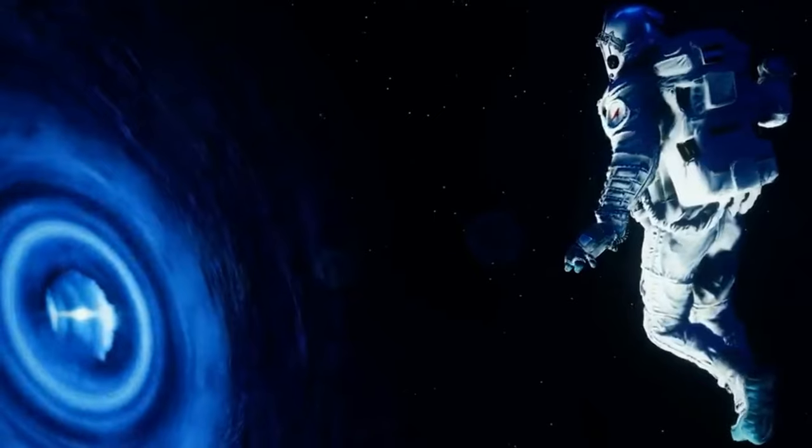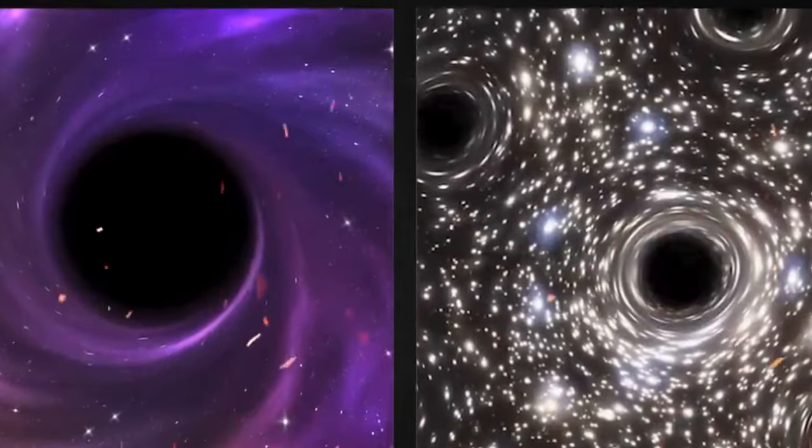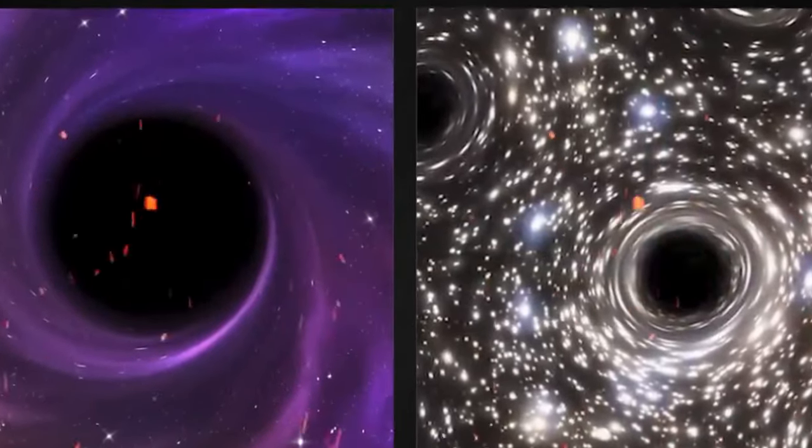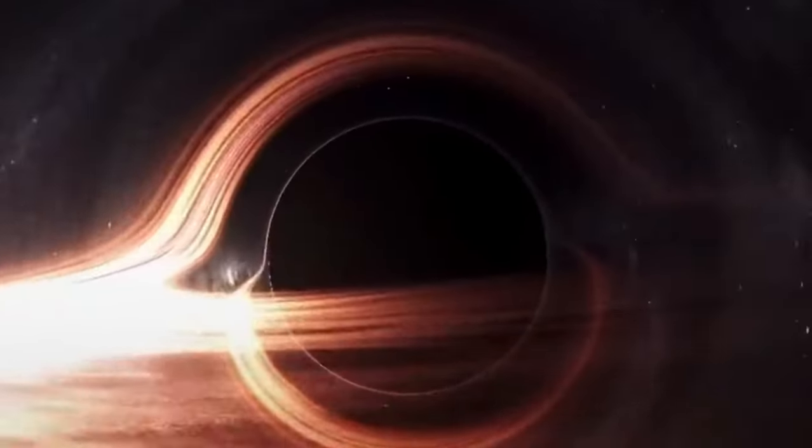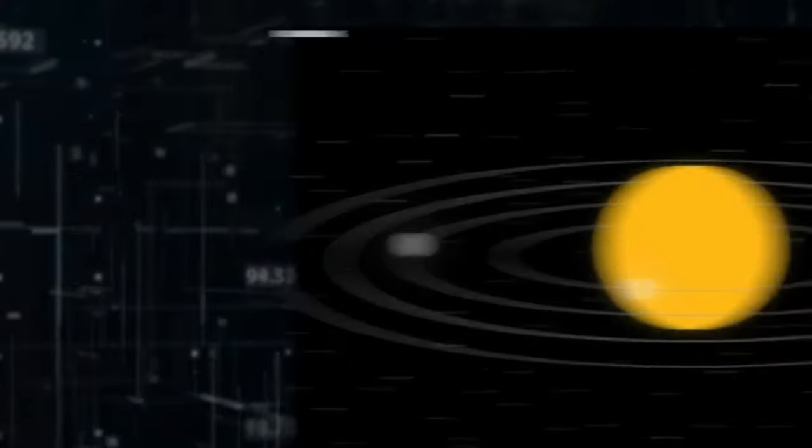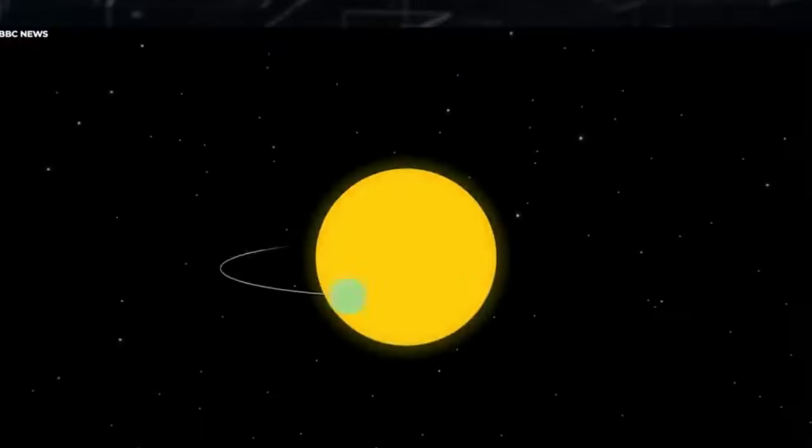With advancements in technology and the launch of sophisticated space telescopes like the James Webb Space Telescope, scientists anticipate even more detailed and precise studies of gravitational lensing effects around black holes and other massive celestial bodies. While gravitational lensing provides valuable insights, there's also speculation about what might exist beyond our current understanding.